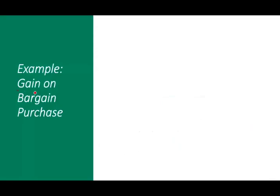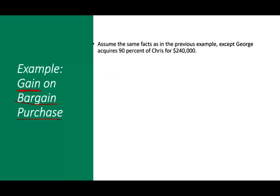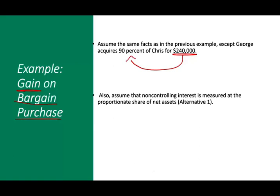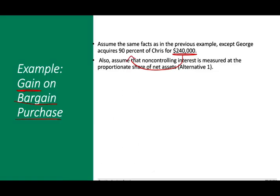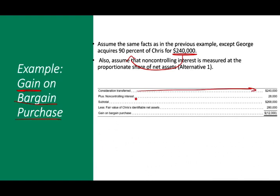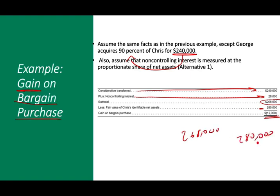Now let's look at a bargain purchase — when you pay less than the fair market value of net assets. Assume the same facts except you paid $240,000 for 90% of the company using the proportionate share method. Consideration of $240,000 plus NCI of $28,000 equals $268,000. Subtract net assets of $280,000 — you paid $268,000 for something worth $280,000. You have a gain on bargain purchase.